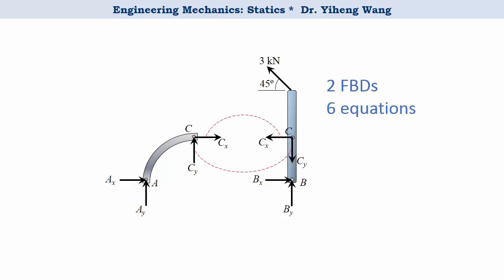And that will enable us to solve for all of our six unknowns: Aₓ, Aᵧ, Bₓ, Bᵧ, Cₓ, and Cᵧ.